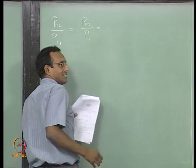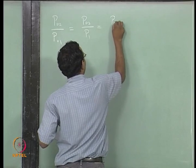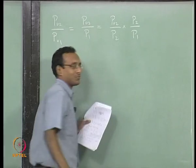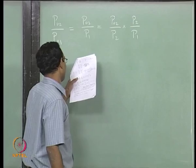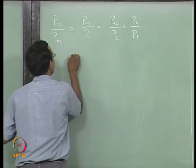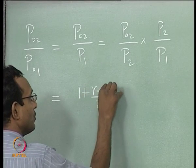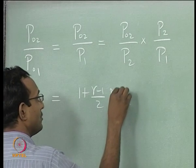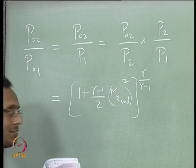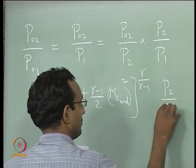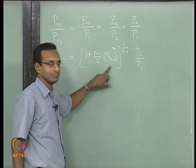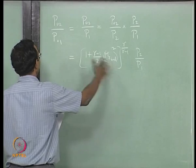I can write P02/P01 = (1 + (γ−1)/2 · M2_induced²)^(γ/(γ−1)) × P2/P1. We know M2 induced as a function of P2/P1 from the expression we just wrote, so the whole expression in terms of P2/P1 can be obtained.